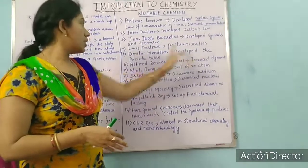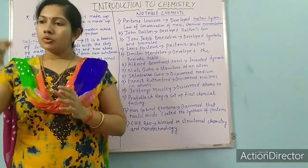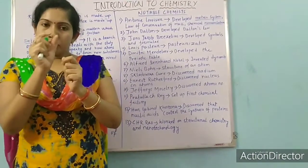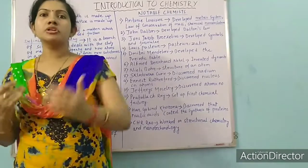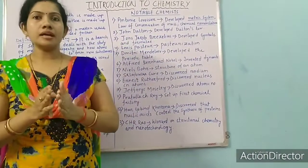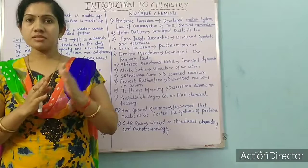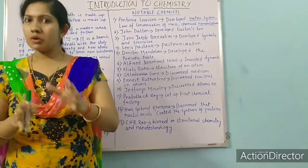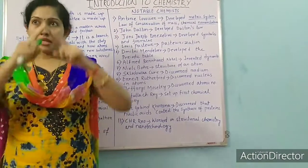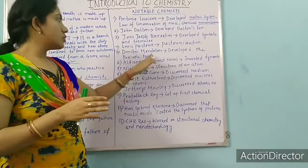Number 5 — Dmitri Mendeleev, a scientist who developed the periodic table. What is the periodic table? There are so many elements — till now 118 elements have been discovered, such as hydrogen, oxygen, and others. How can we identify these elements? They need to be arranged properly. So the arrangement of elements according to their properties is known as the periodic table. Dmitri Mendeleev developed the first periodic table.